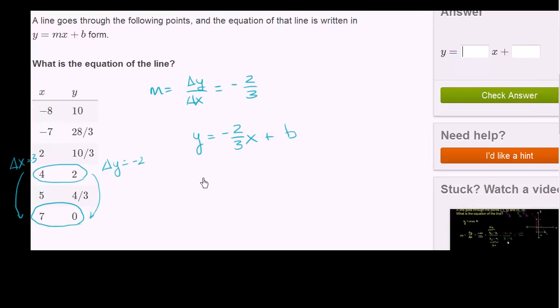So when x equals 7, y equals 0. So 0 equals negative 2 thirds times 7 plus b. Or 0 equals negative 14 over 3 plus b. Add 14 over 3 to both sides. You get 14 over 3 is equal to b.